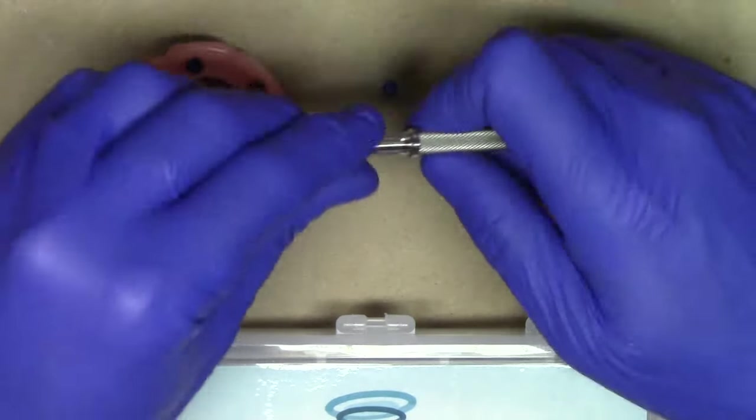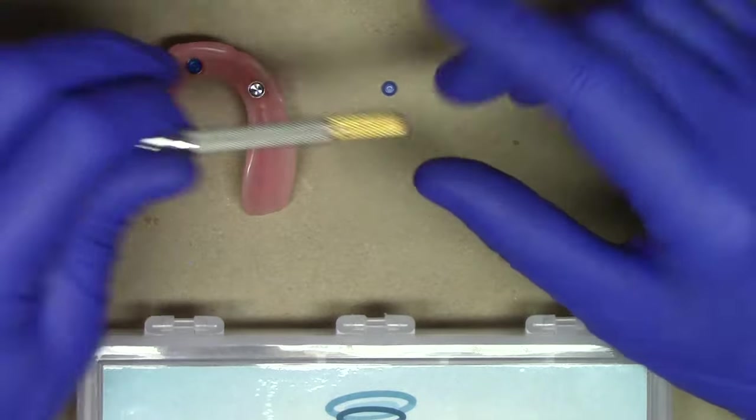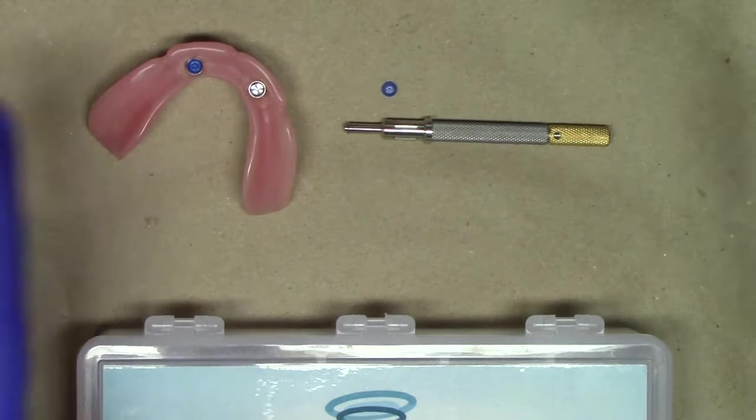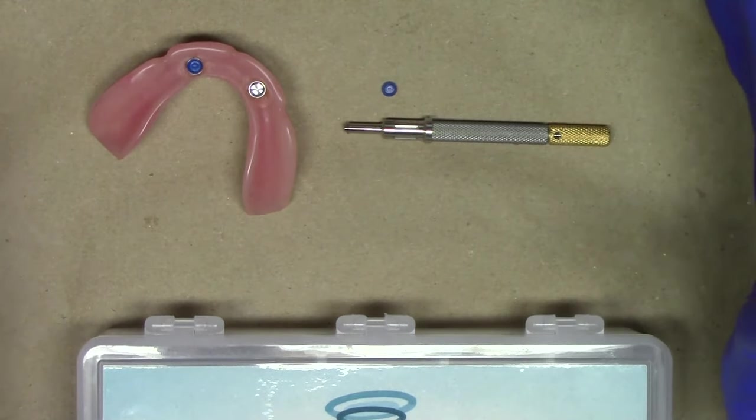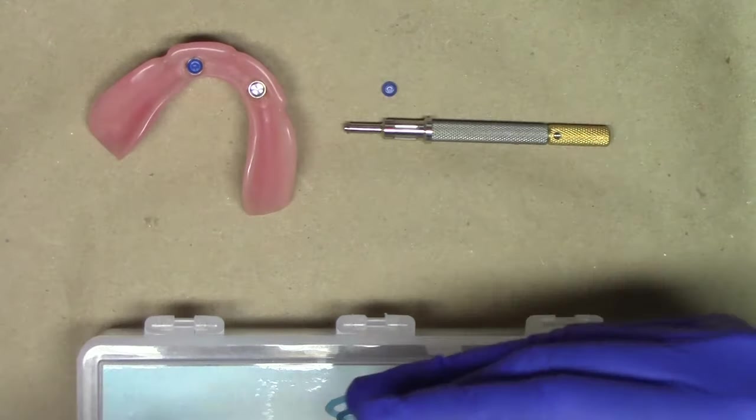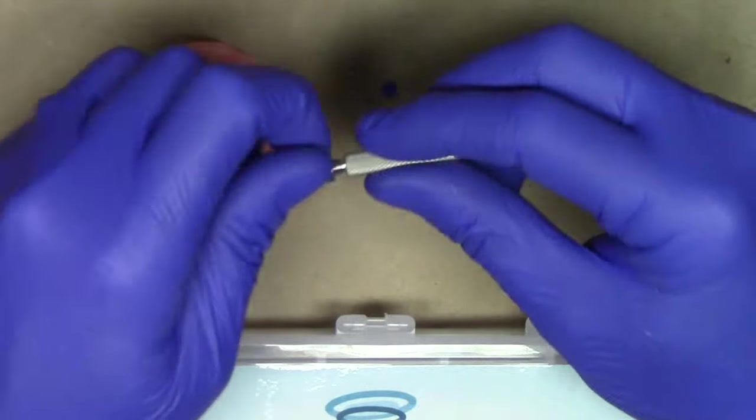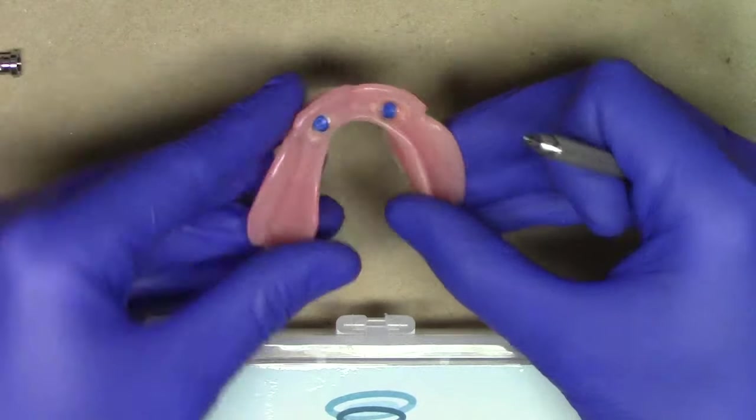But case in point, what will happen a lot of times in my offices is I'll start with the blue attachment, and sometimes the patient will say, doc, I wish it was a little bit more retentive than that. Then I'll take the pink attachment and insert it. And then sometimes what will happen is I have to actually remove the pink attachment because it's too retentive. And then I can easily go back to the same insert, as you see here, just pop it right on there, goes into the denture, and now I'm rocking.